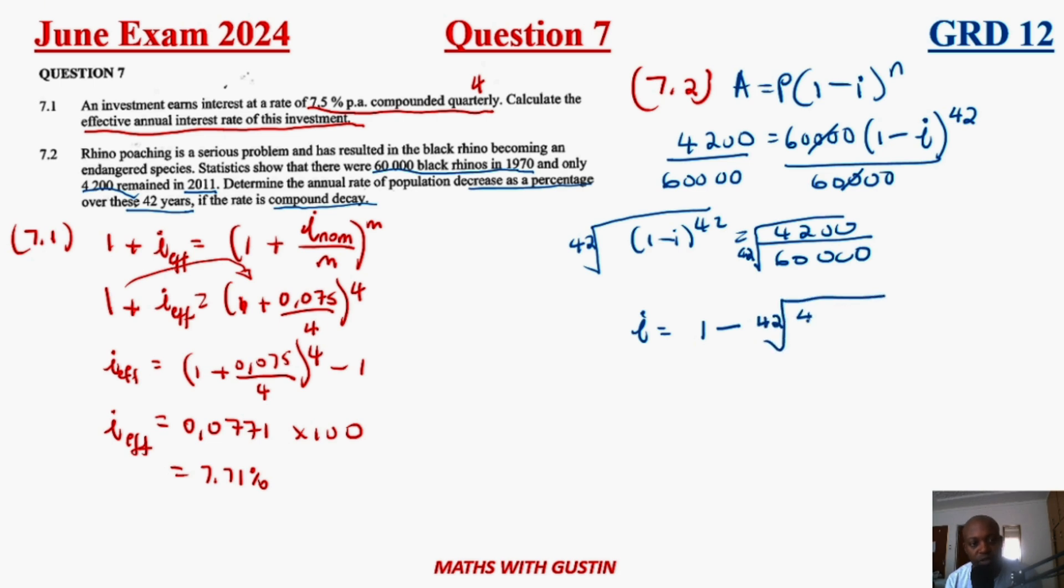If you make i the subject of the formula, I'm skipping some of the steps here but if you don't understand please let me know in the comment section below. Basically, what I just did is I took one to the other side and then I'm going to be left with negative i, then divided everything by negative.